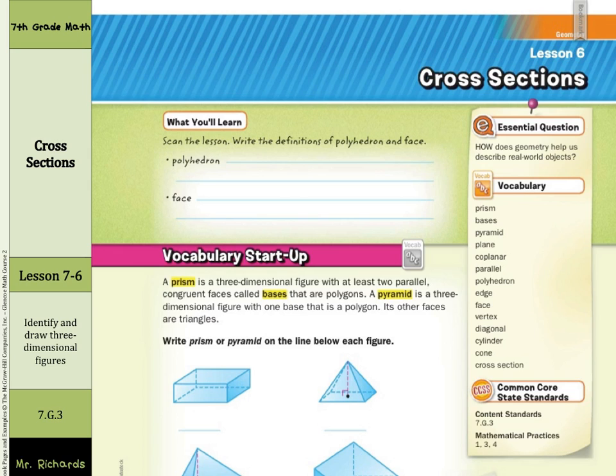Our vocabulary startup: a prism is a three-dimensional figure with at least two parallel congruent faces called bases that are polygons. A pyramid is a three-dimensional figure with one base that is a polygon. Its other faces are triangles.